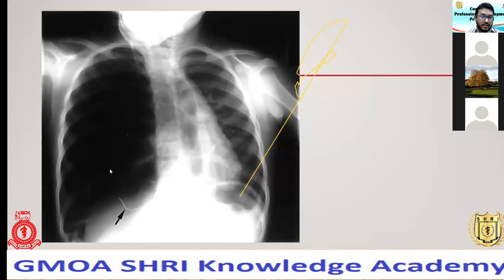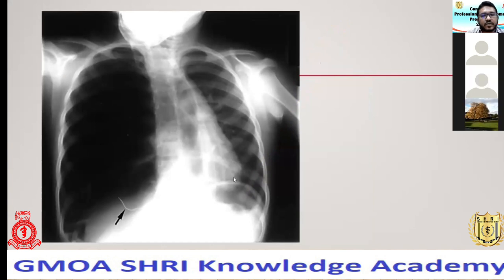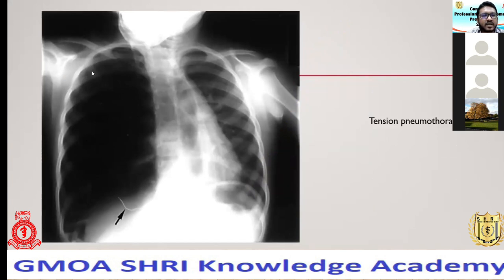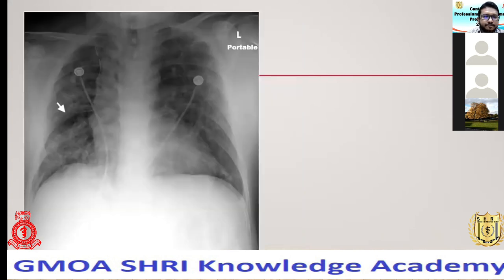Here again is a pneumothorax. You can see NG tubes, and the mediastinum is completely distorted and shifted towards the right side, with hyperlucency on the left side. There is significant shifting of the mediastinum — this is an emergency. You don't need to wait for a surgical registrar; if you diagnose this, you need to immediately needle decompress on the left side, inserting a large-bore needle between the second and third ribs anteriorly. This is a tension pneumothorax.